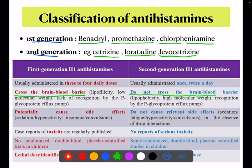If a drug can cross the blood-brain barrier, the usual side effects are sedation, hyperactivity, insomnia, and convulsions. In the second generation, these side effects are not seen. Cases of toxicity are regularly reported, meaning that first generation drugs have more toxicity compared to second generation drugs.